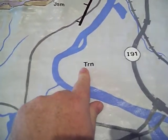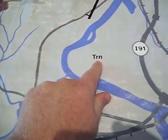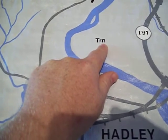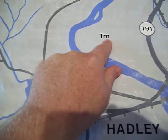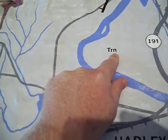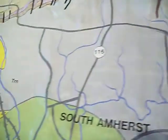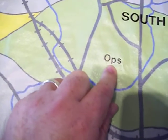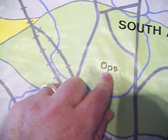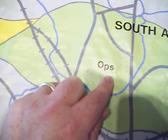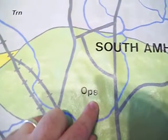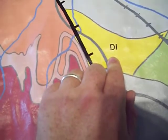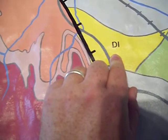Over here you'll see a different code: TRN — TR stands for Triassic, N stands for New Haven Arkose. Then you'll have other codes like O, and there's PS — I can't remember what PS stood for — is it Partridge? The Partridge Formation.